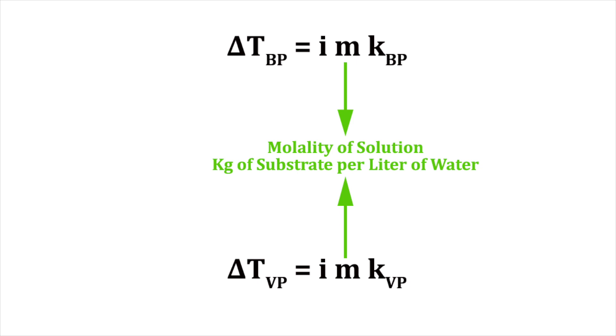Molality, denoted by the lower case m, is the amount of substrate added to the water. The lower case k indicates water's boiling point or vapor pressure constants.